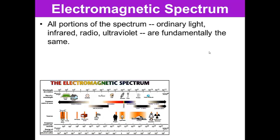All portions of the spectrum, ordinary light, infrared, radio, and ultraviolet are fundamentally the same. So they all have a frequency and they all have a wavelength. The difference is in the frequency and the wavelength.